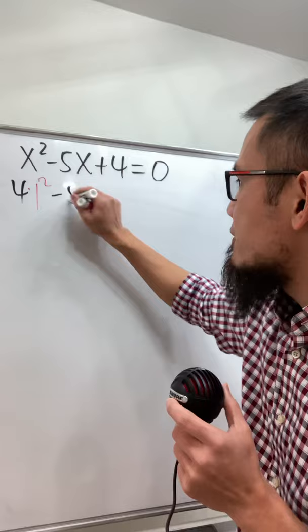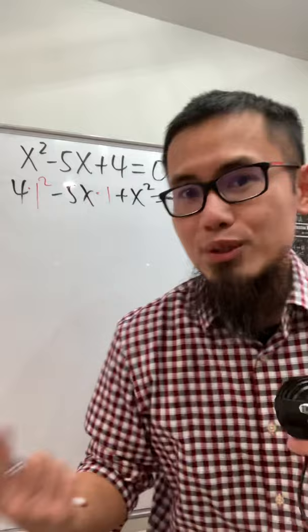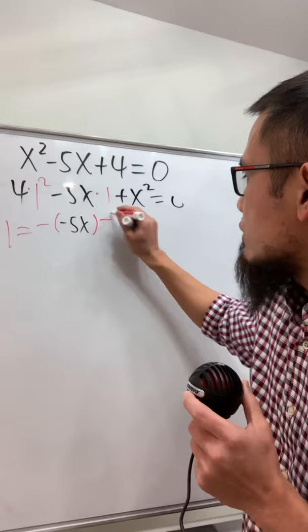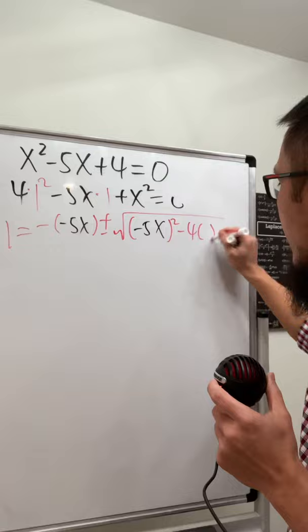Now we have a quadratic equation in terms of 1. We can use the quadratic formula. So 1 equals negative b, which is negative 5x, plus or minus the square root of b², which is negative 5x², minus 4ac.